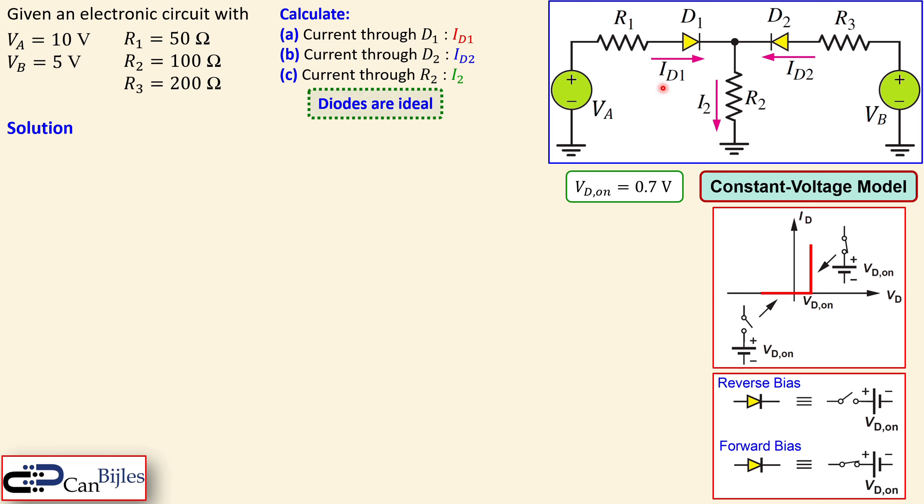Now we have two sources VA and VB and two diodes, so we need to be careful because we don't know which diodes are conducting. We can assume both are on, D1 is on and D2 is off, or the reverse, or both are off — so we have four options. I will start with the assumption that D1 and D2 are both on.